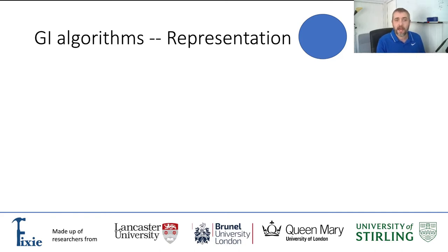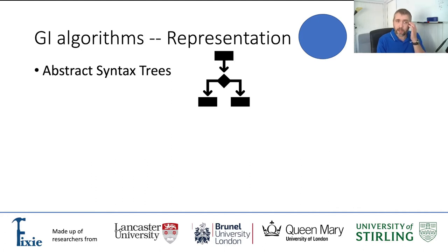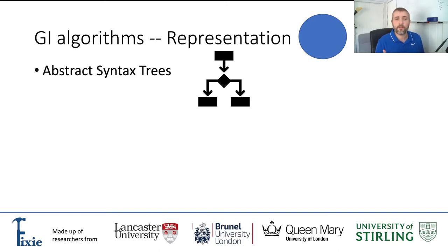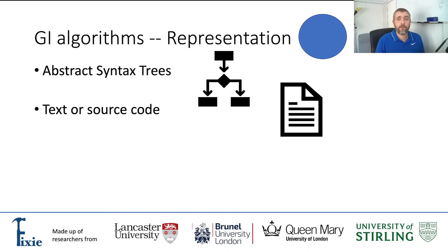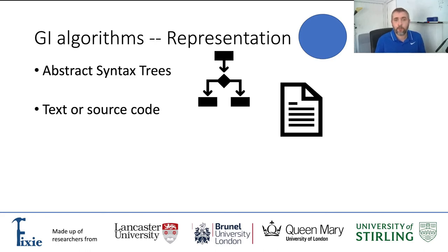These solutions can be represented in different ways for the algorithm to manipulate into new solutions. We can, for example, represent them as abstract syntax trees. Then each new solution is found by moving around or changing nodes or branches in these trees, and the algorithm can be configured to only follow a logical structure that is guaranteed to be syntactically correct. Some GI approaches work directly on the text-based source code, where the algorithm makes changes with string or text operations. Clever configurations can guarantee correct syntax and structure, but they have to be expressed explicitly, unlike abstract syntax tree approaches where the tree kind of takes care of that.